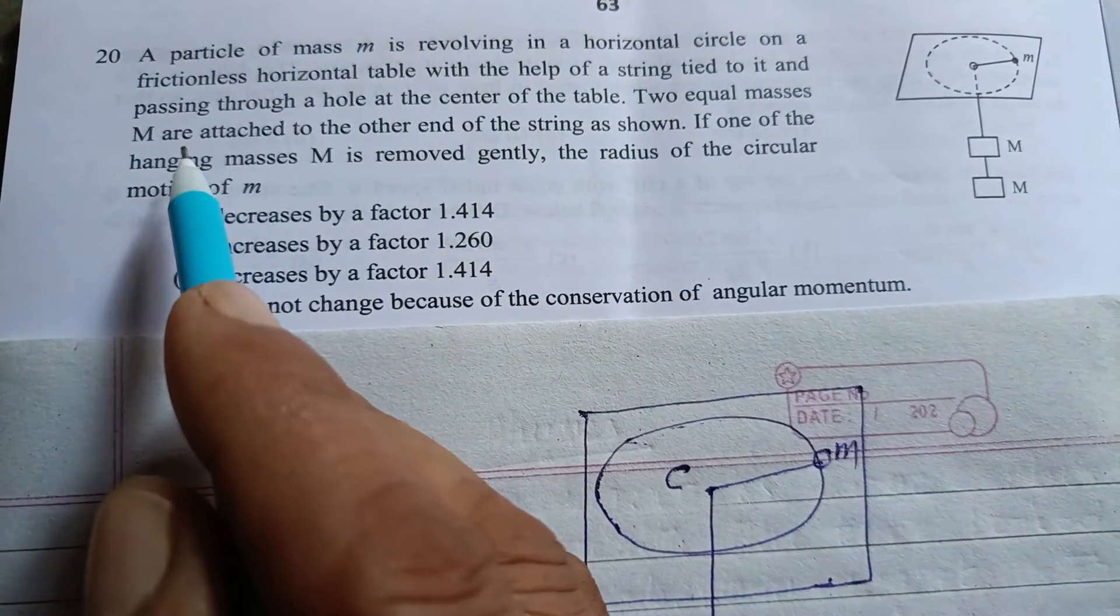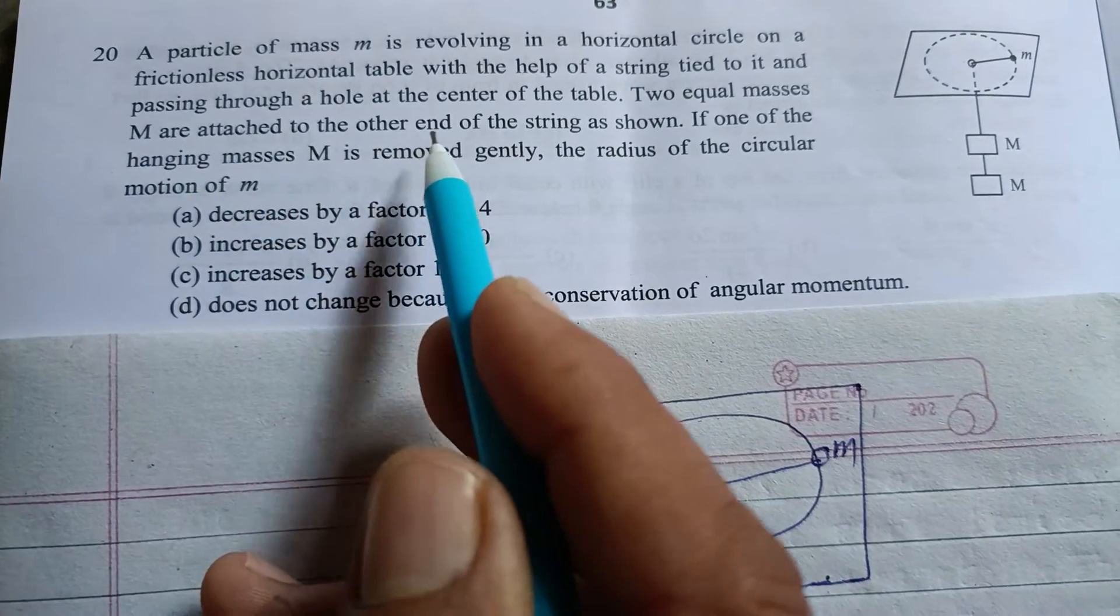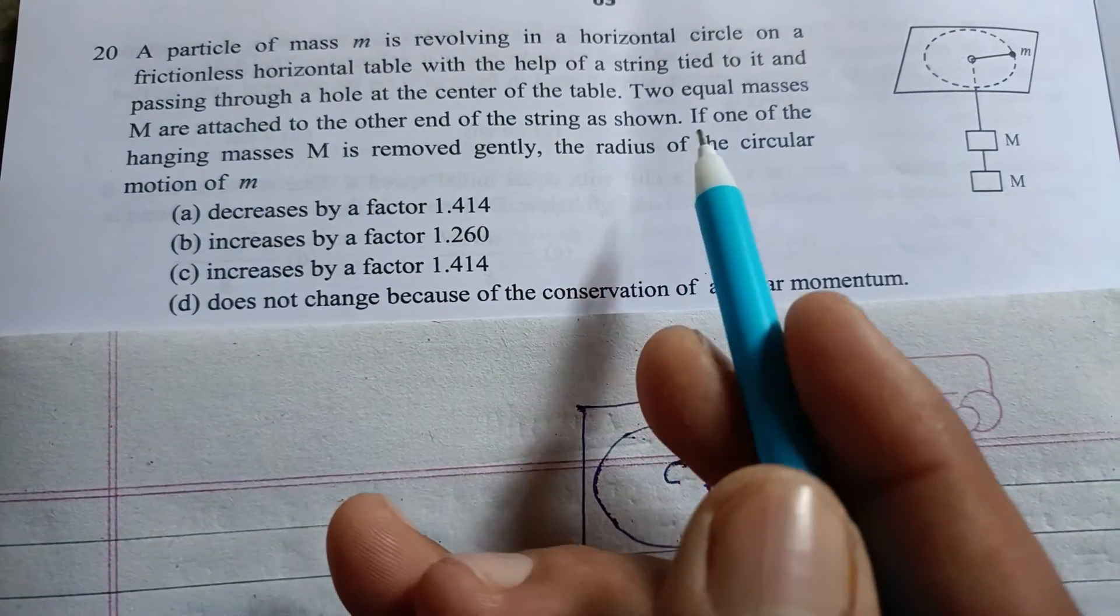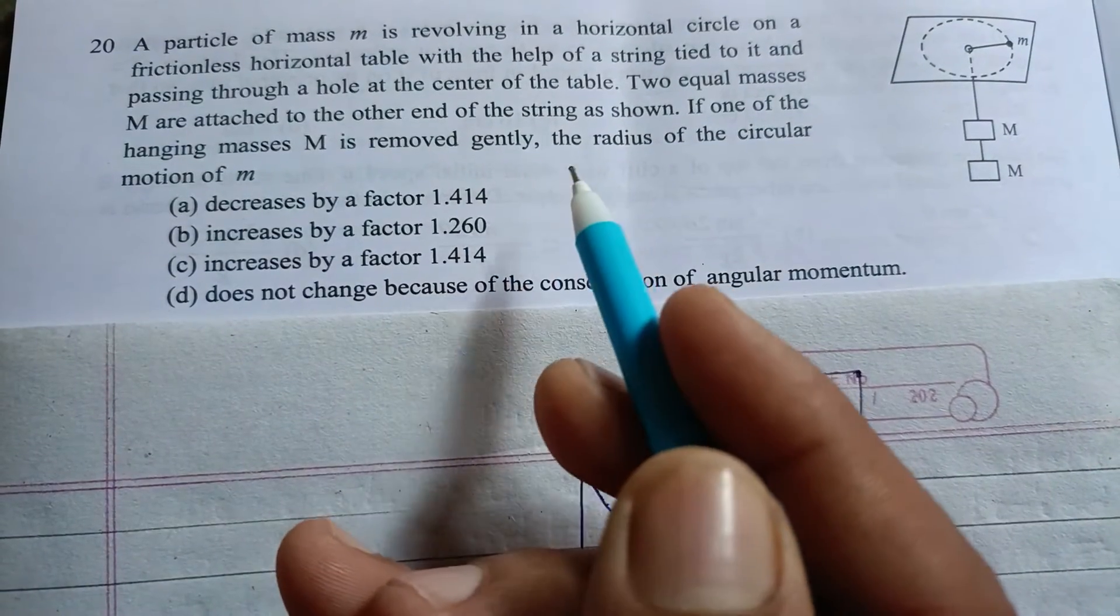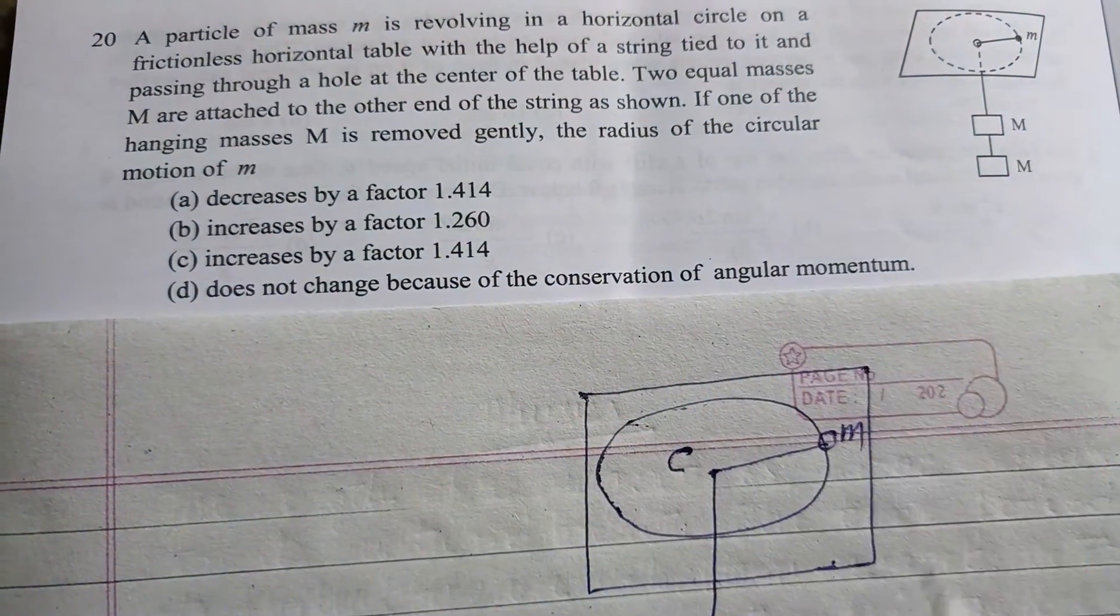The equal masses M are attached to the other end of the string as shown in the figure. If one of the hanging mass M is removed gently, the radius of the circular motion of m is...